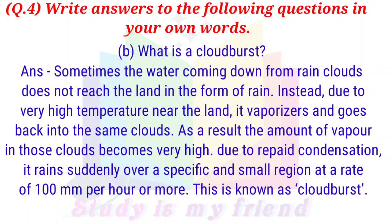B) What is a cloudburst? Answer: Sometimes the water coming down from rain clouds does not reach the land in the form of rain. Instead, due to very high temperature near the land, it evaporates and goes back into the same cloud. As a result, the amount of vapor in those clouds becomes very high. Due to rapid condensation, it rains suddenly over a specific and small region at a rate of 100 mm per hour or more. This is known as a cloudburst.